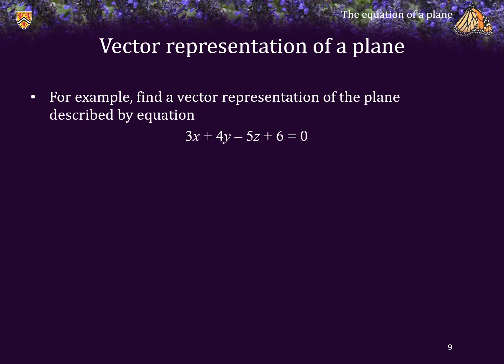For example, let's find a vector representation of the plane described by this equation, 3x plus 4y minus 5z plus 6 is equal to 0. We first start by defining the normal vector, which are the coefficients 3, 4, and negative 5.